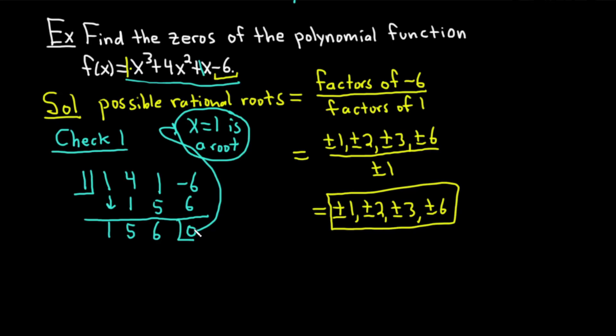If you don't get 0, then you just check another one. So it's a trial and error method. So again, you find the possible rational roots. Then you just start checking roots until you get one. Once you get one answer, then the next step is a little bit easier. So you write down the 1. You write down the coefficients. Bring down that 1. 1 times 1 is 1. 4 plus 1 is 5. 5 times 1 is 5. 1 plus 5 is 6. 6 times 1 is 6. You add and you get 0. Whenever you get 0, you get an answer.